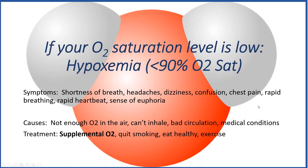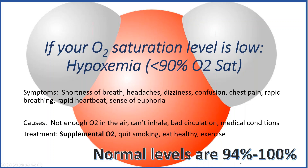So if your oxygen saturation level is low — what's normal when we say low? Normal is 94 to 100%. If it's below that, particularly if it's below 90%, it's called hypoxemia. And then you may have things like shortness of breath, headache, dizziness, confusion, chest pain. Things are going to speed up — your heart rate, your breathing — because it's trying to compensate for the lack of oxygen. And then you may have a sense of euphoria because it's affecting your brain.